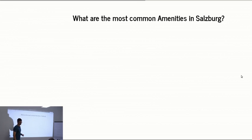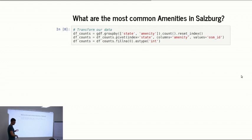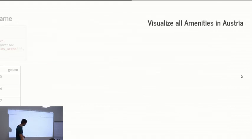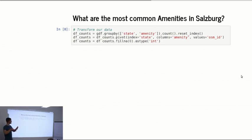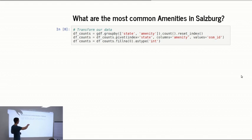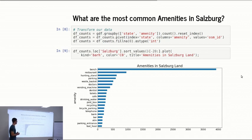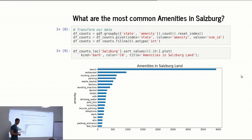What are the most common amenities in Salzburg? First, we have to transform our data — we have each tag and each state, and we want to have for each state the tag count. So we do a group-by as we would in SQL, then count and reset the index to make it work. Then you do a pivot and transform it so that you have the amenity keys as columns and states as indices. When we visualize it, the most common amenity is bench. If you remember, the most common amenity in the world is parking — and apparently in Salzburg there is not enough of it.